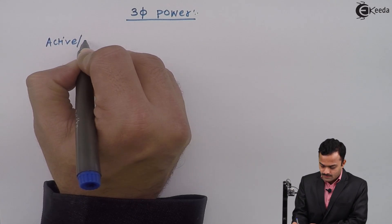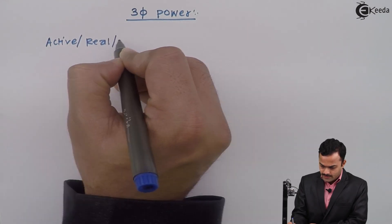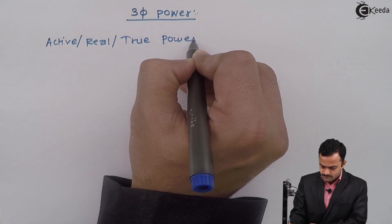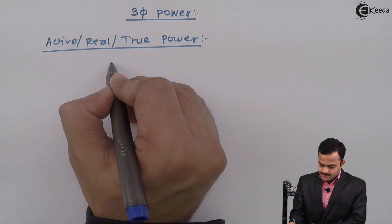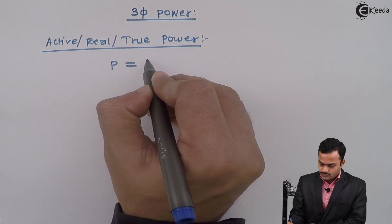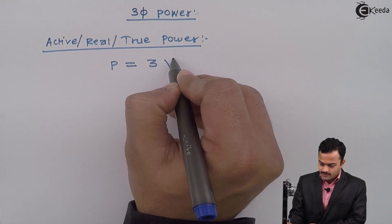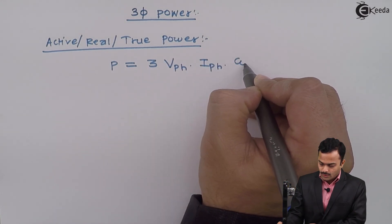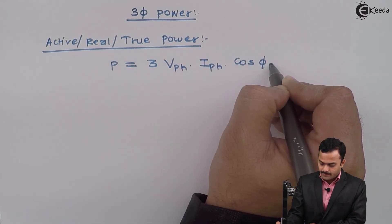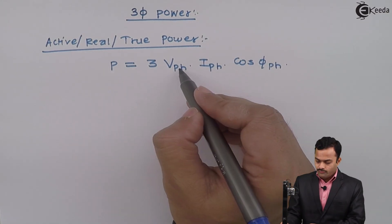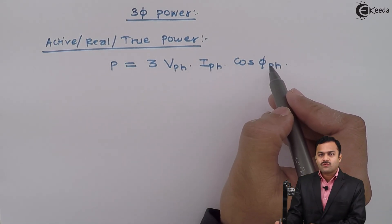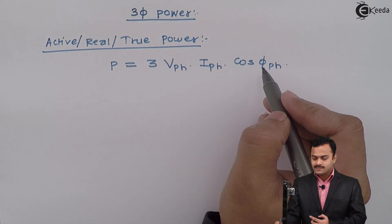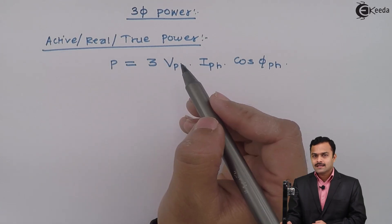First is active, real or true power. It is given as P equal to 3 VPH, IPH, cos φPH. VPH, IPH, cos φPH is the power consumed by a single-phase circuit. But it is a three-phase, therefore multiplication by 3.